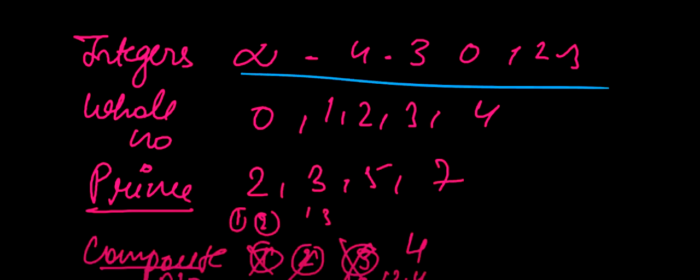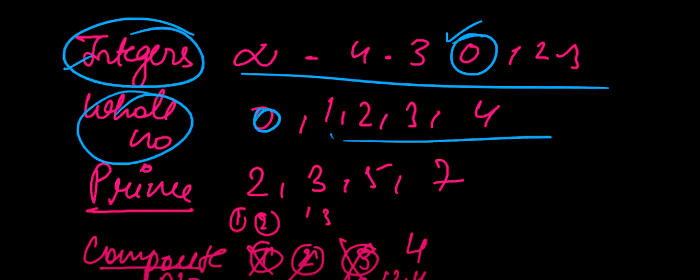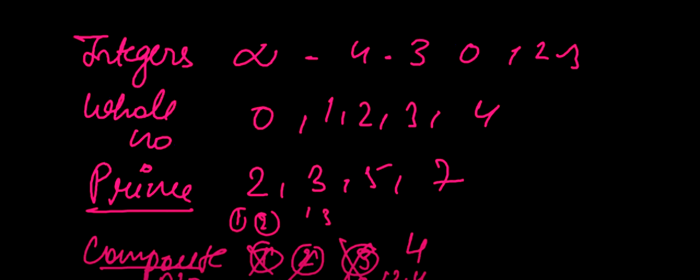Integers are positive and negative whole numbers including 0. Whole numbers are 0, 1, 2, 3, and all numbers including 0. What is the natural number? The natural number starts from 1.